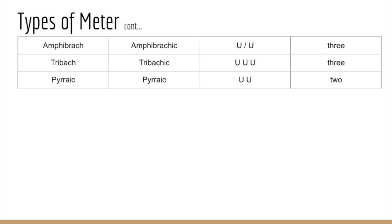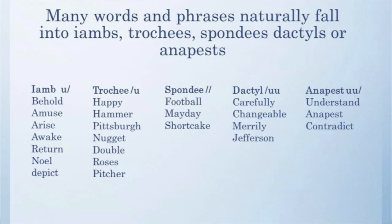Let's look at some examples of words that fall into these various categories. Starting with iambic: behold, amuse, arise, awake, return, noel, depict — notice how they fall into that unstressed-stressed pattern. Now go ahead and read each word out loud. For trochee: happy, hammer, Pittsburgh, nugget. Pause the video here if you want to go over the rest of them, but let's move on to the next slide.